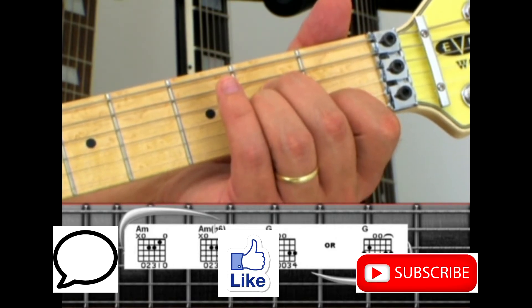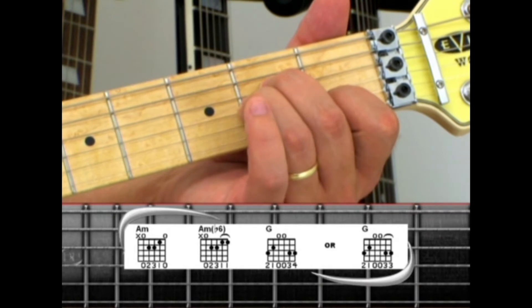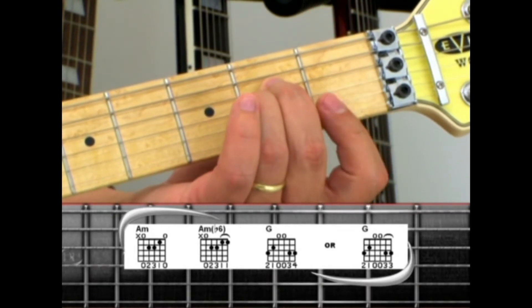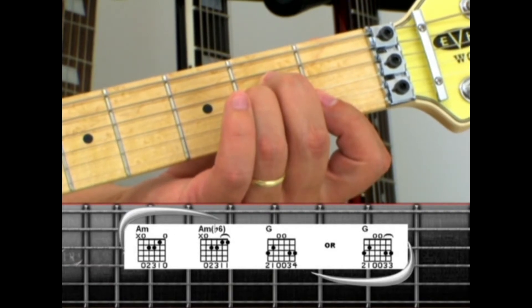The A minor flat six uses the same fingering but adds the first string first fret by barring the index finger to hold both the second and first strings.